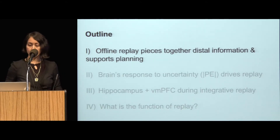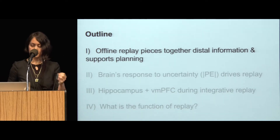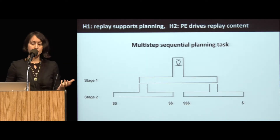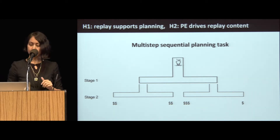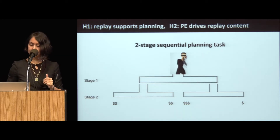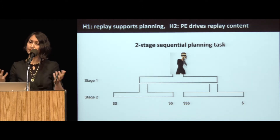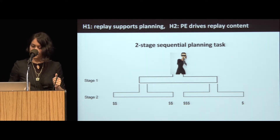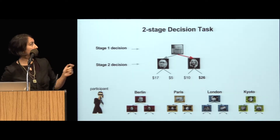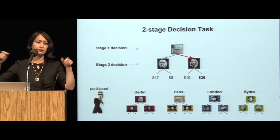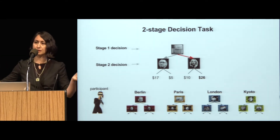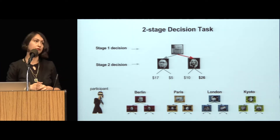Let me start with the first question: whether offline replay can piece together distal information to support planning. To test this, we use a multi-step sequential planning task. For the rodent neuroscientists, it's like stacking T-mazes on top of each other. In this case, instead of rodents, we had Princeton undergrads. I told them that the task is that they are a thief and they're supposed to look for money — this motivated them a lot, their behavior was great. They would be this traveling thief who would go to different cities and face different architectures, exploring the environment to find out where's the best money.